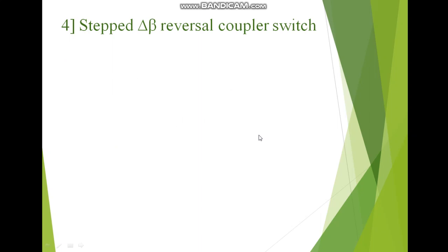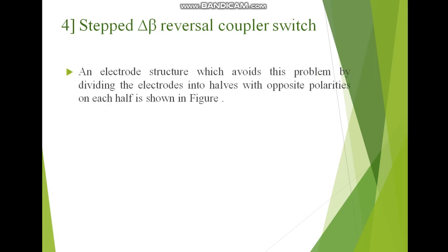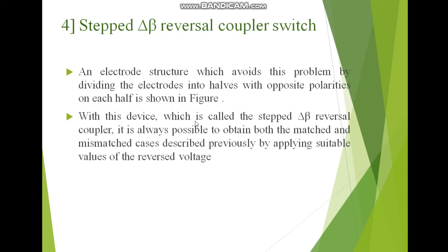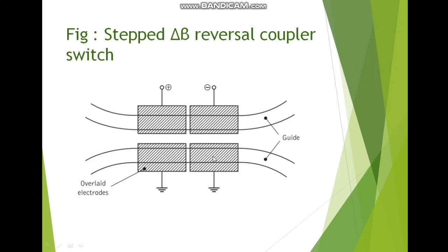Next we will discuss the stepped ΔB reversal coupler switch. Here we use two more electrodes, dividing the electrode structure into two halves with opposite polarities on each half. This device, called the stepped ΔB reversal coupler, avoids the problems faced by the previous electrode switch. It is always possible to obtain both the matched and mismatched cases by applying suitable values of the reverse voltage. In this diagram, the electrodes are divided into two halves — positive and negative — with two waveguides, allowing the signal to flow and produce the desired output.